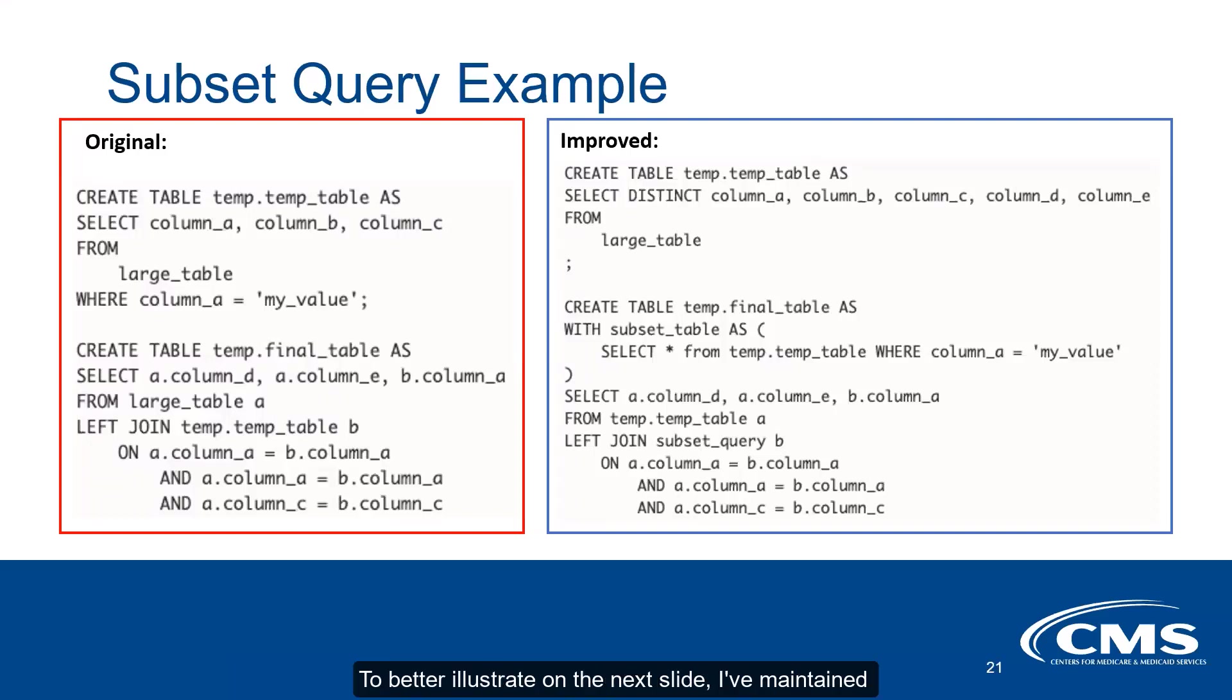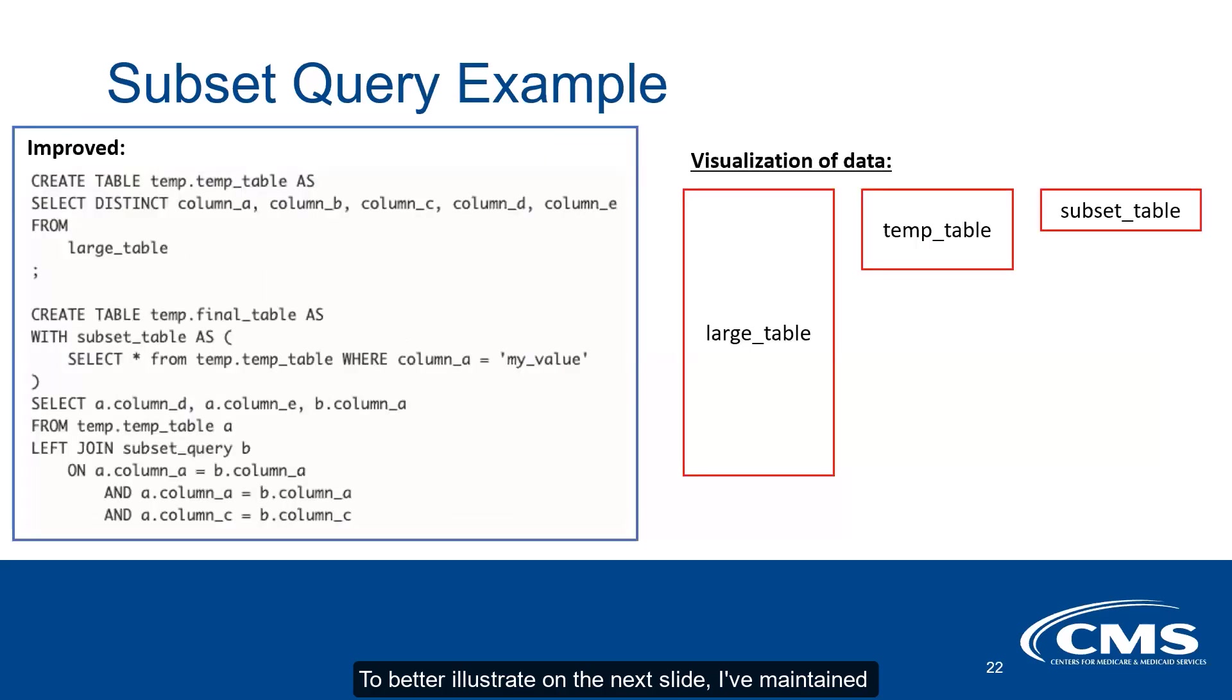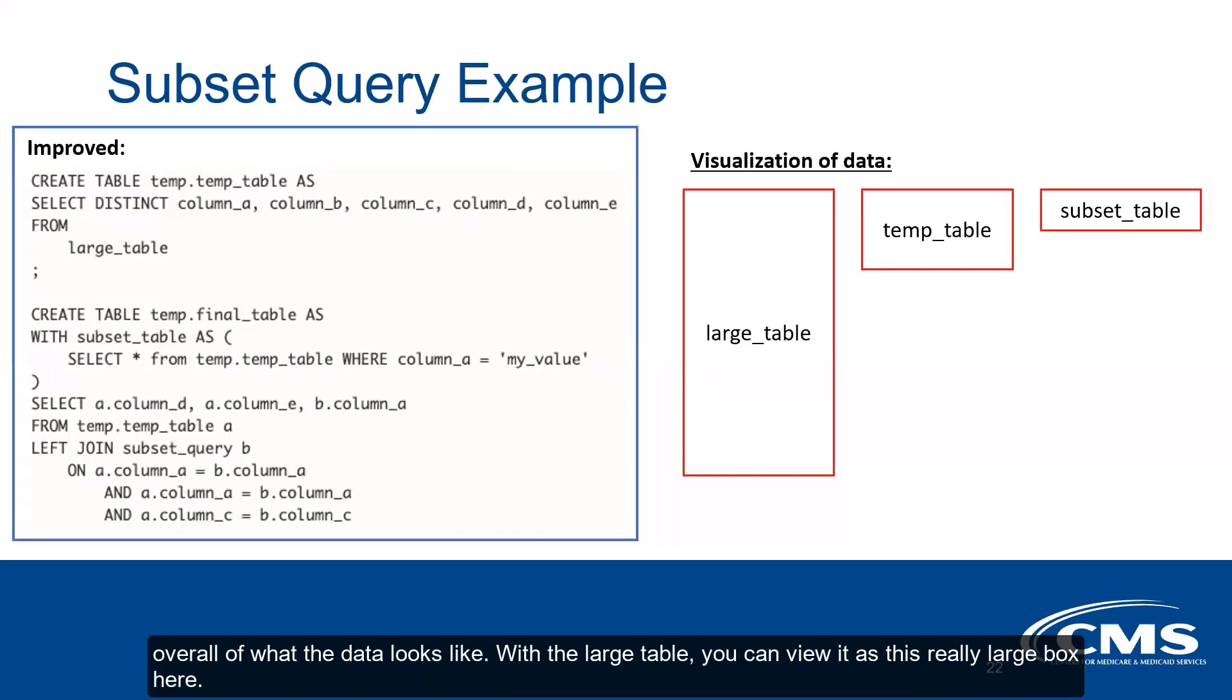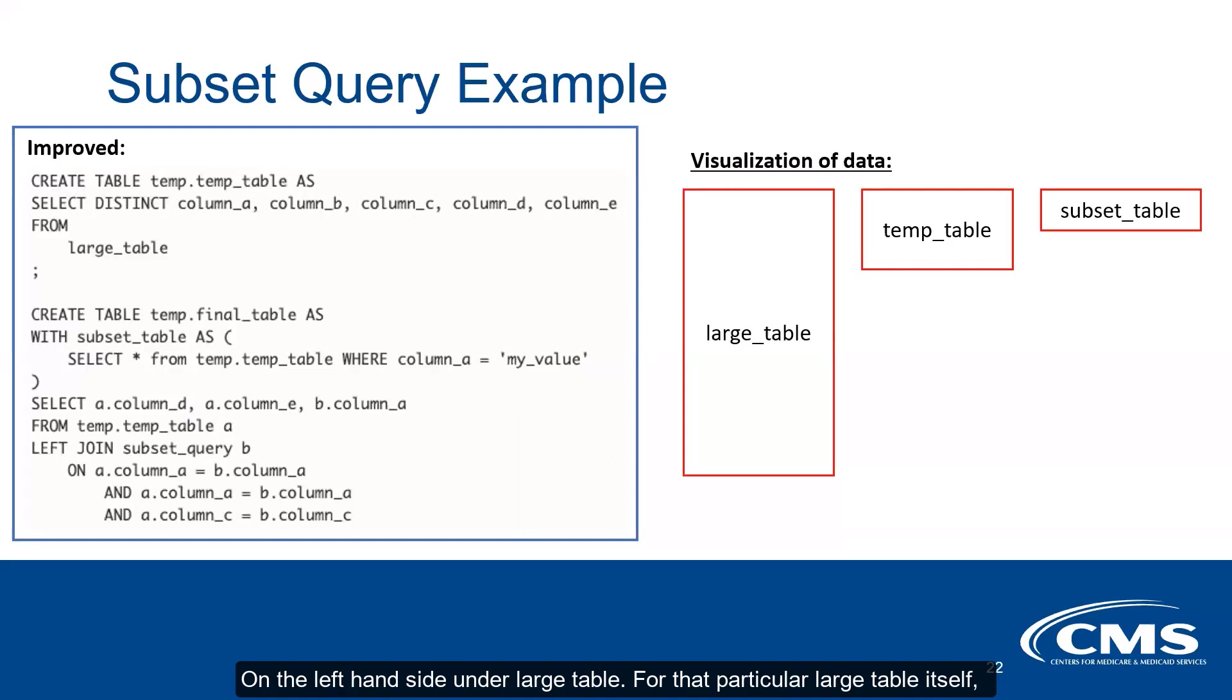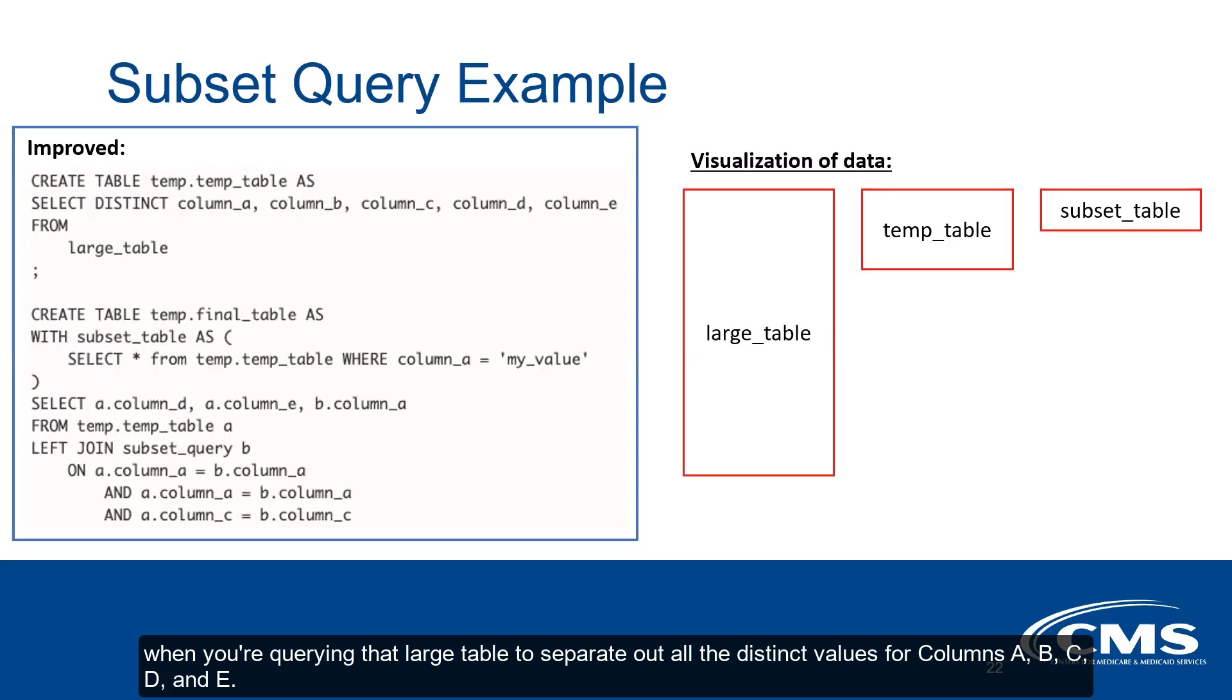To better illustrate on the next slide, I've maintained that improved query here. On the right side, I've introduced a visualization of what the data looks like. With the large table, you can view it as this really large box here on the left-hand side. When you're querying it to separate out all the distinct values for columns A, B, C, D, and E, you'll essentially create a smaller table called temp_table, visualized here as that middle box being significantly smaller compared to that large table.